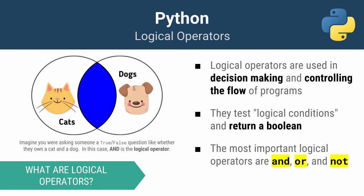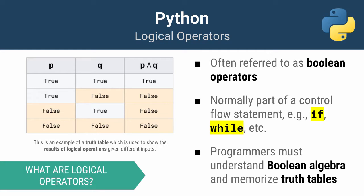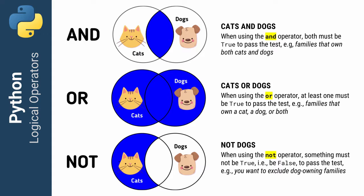Now let's talk about logical operators. Logical operators allow us to make decisions in our programs and control the program's flow. They test logical conditions and always return a Boolean — either true or false. The most important logical operators we're going to learn are AND, OR, and NOT. Logical operators are often referred to as Boolean operators and are normally part of a control flow statement like an if statement or a while loop. Programmers must understand Boolean algebra and memorize truth tables, which we'll talk about later.